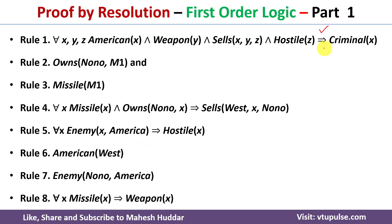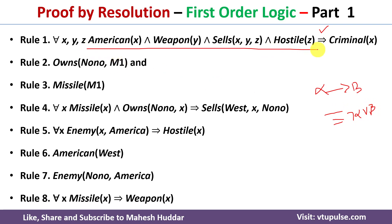For rule one, there is an implication. To remove it we use: α → β ≡ ¬α ∨ β. The premise becomes negated and joined with OR to the conclusion. Distributing the negation inside using De Morgan's law: ¬American(x) ∨ ¬Weapon(y) ∨ ¬Sells(x,y,z) ∨ ¬Hostile(z) ∨ Criminal(x). The universal quantifier is then removed, giving rule one in CNF.